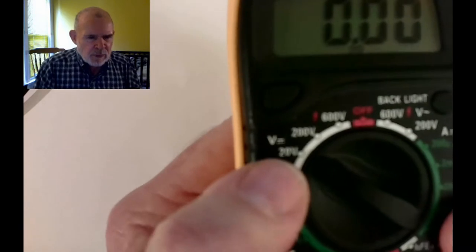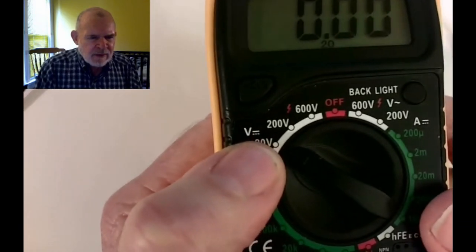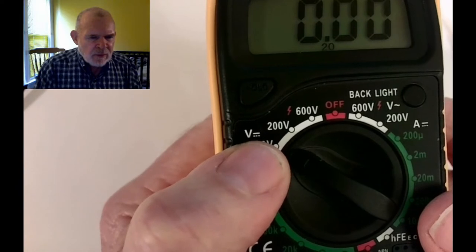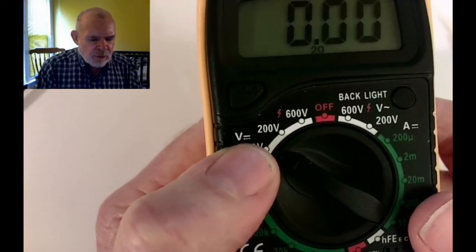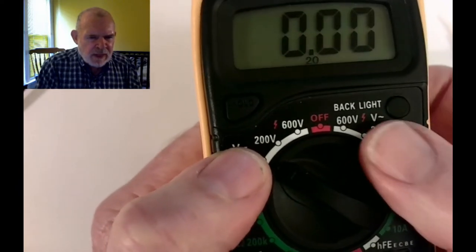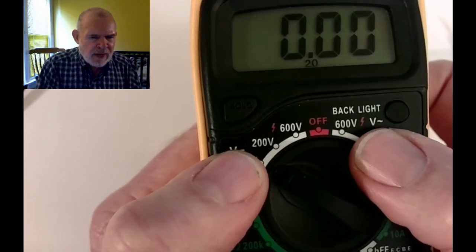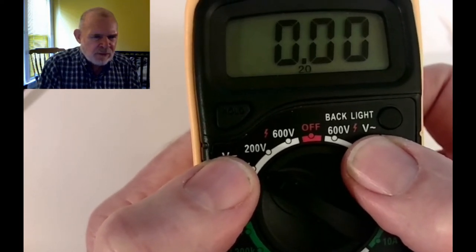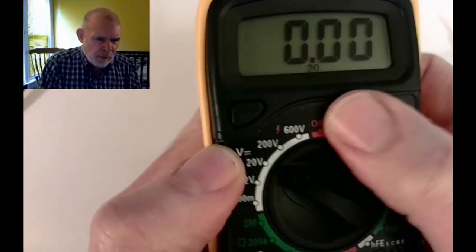One thing I want to show you is notice where it says volts here, it's got a line with dots under it. That stands for direct current. On the other side, it's got a little sine wave or squiggly - that stands for alternating current. Remember, we're not going to use those.